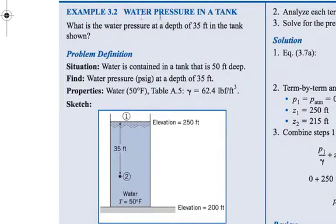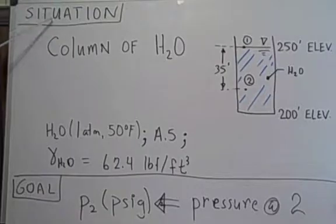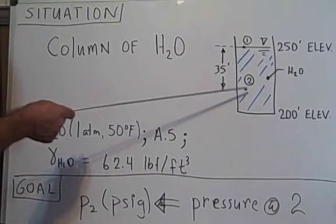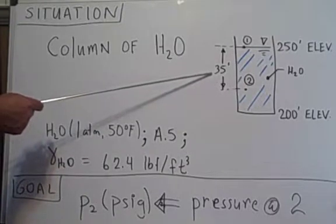Example 3.2 involves water pressure in a tank. The problem statement is, what is the water pressure at a depth of 35 feet in the tank shown? There's a sketch here of a tank. The situation: we have a column of water, and point 1 and point 2 are separated by 35 feet.